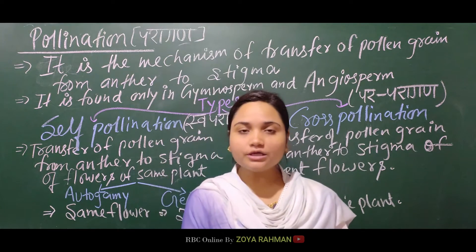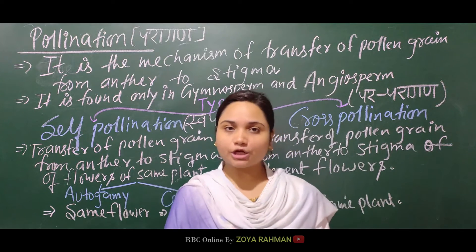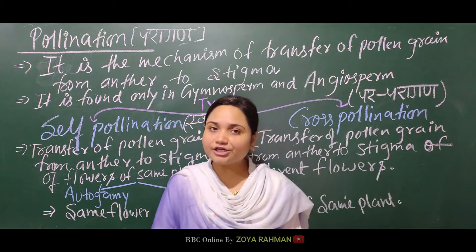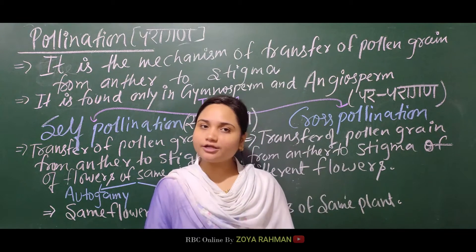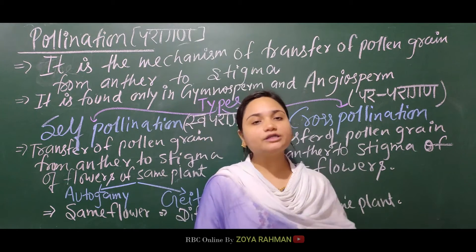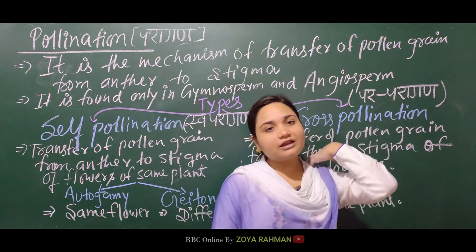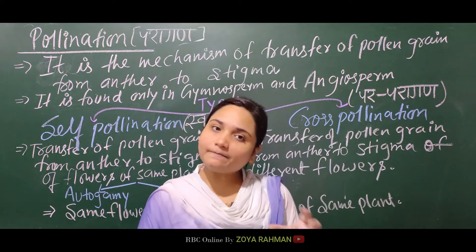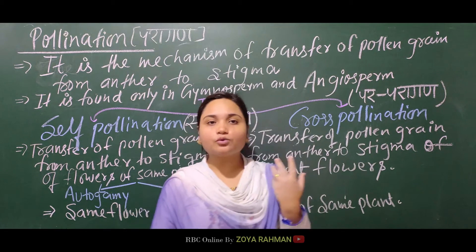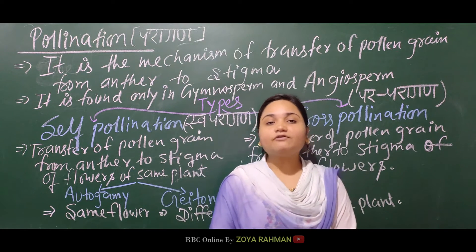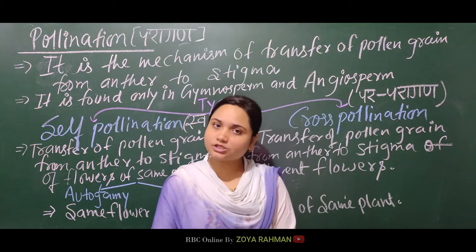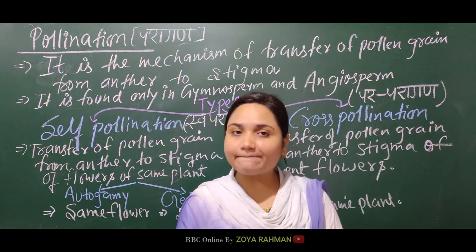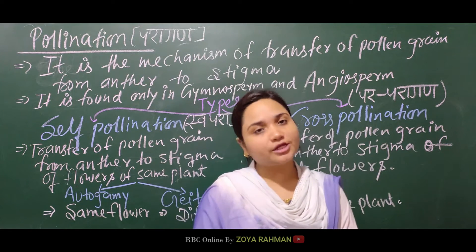In our next topic, we need to learn about adaptations. If there is self-pollination, what speciality should flowers have so that self-pollination can occur easily without disturbance? So for self-pollination — swapragan — we will talk about adaptations. What features should flowers have to make self-pollination easy? That is, adaptations for self-pollination in a flower.